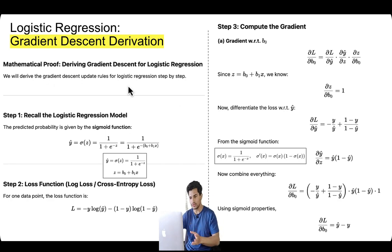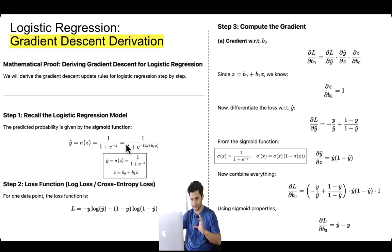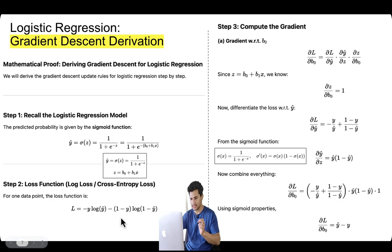This is the mathematical proof of gradient descent — which you may be asked to derive in interviews. The predicted probability ŷ is the sigmoid function of the logit (log of odds). We denote predicted probability as ŷ, where ŷ = sigmoid(z), and z = b₀ + b₁x (which is also the log of odds). We apply sigmoid to z to get probability. The loss function is: L = -y·log(ŷ) - (1 - y)·log(1 - ŷ), where ŷ are predicted probabilities and y are actual labels.